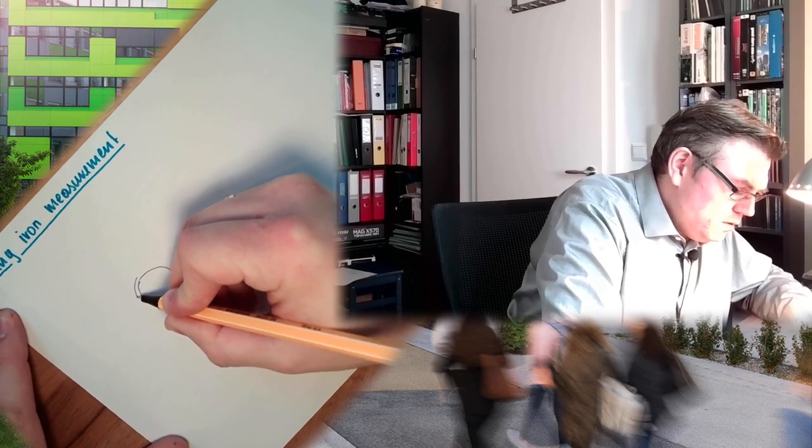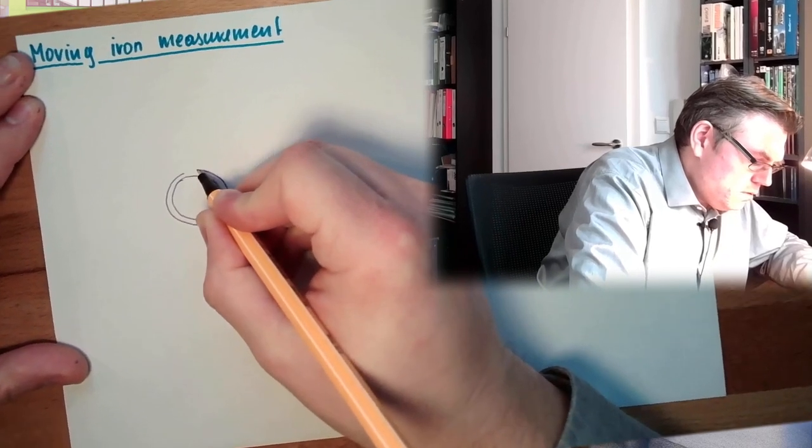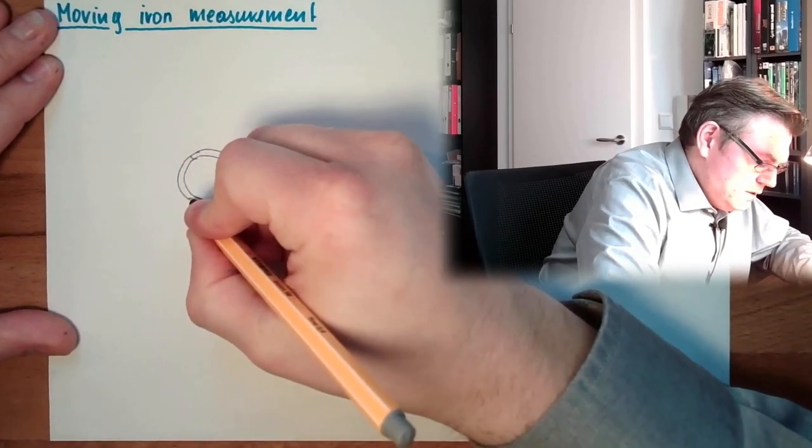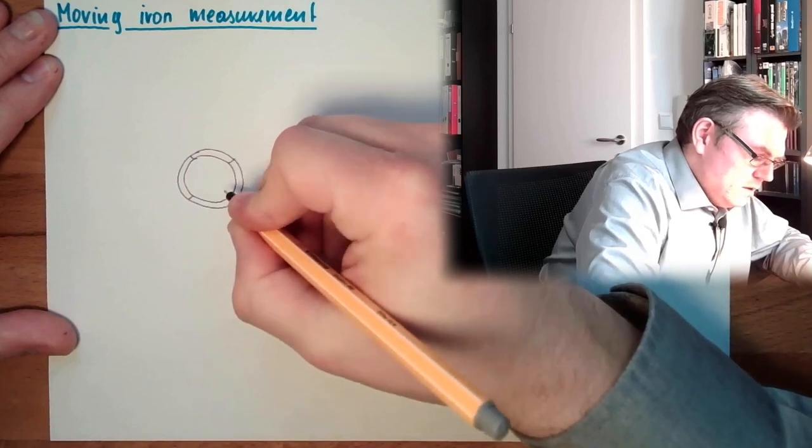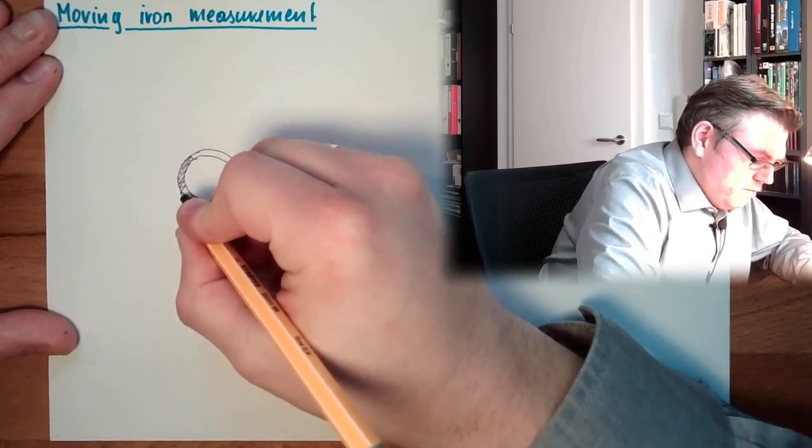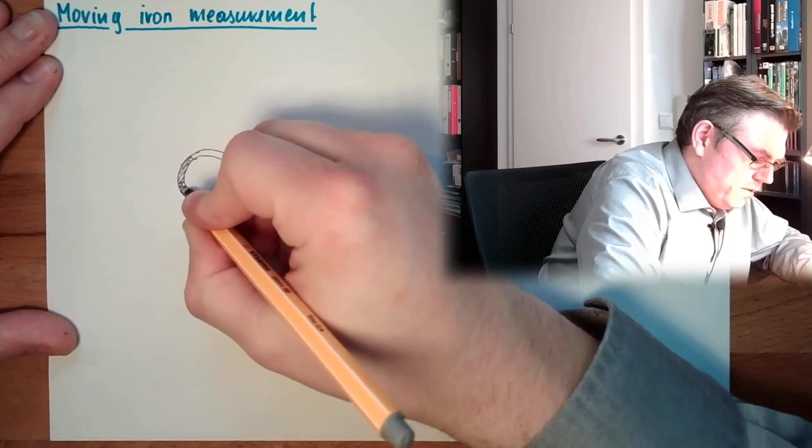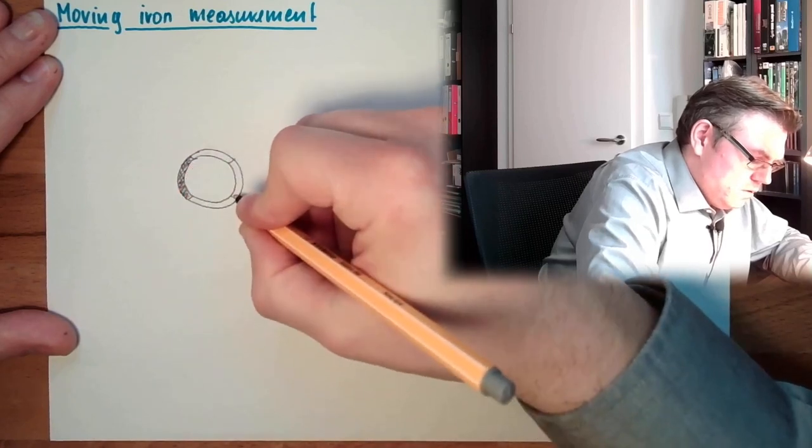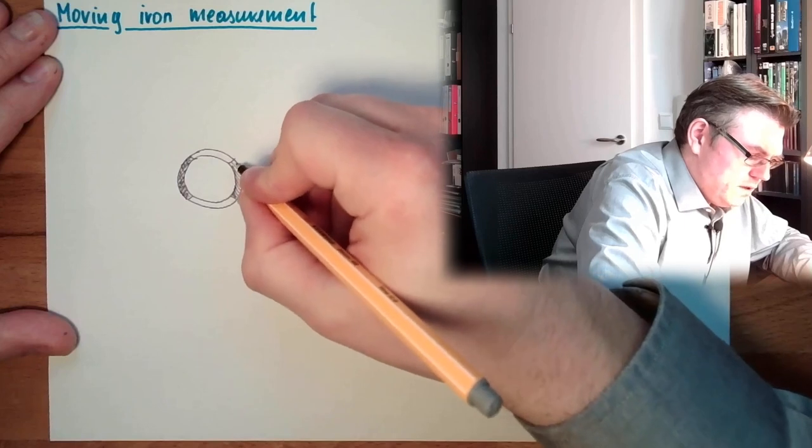How this is working I want to explain briefly, not in detail, but briefly. Well, we have, as a base, again a winding, but this winding is now wrapped around some sort of tube. And part of this tube is made of ferromagnetic material. So here this is ferromagnetic material, this is a fixed iron.